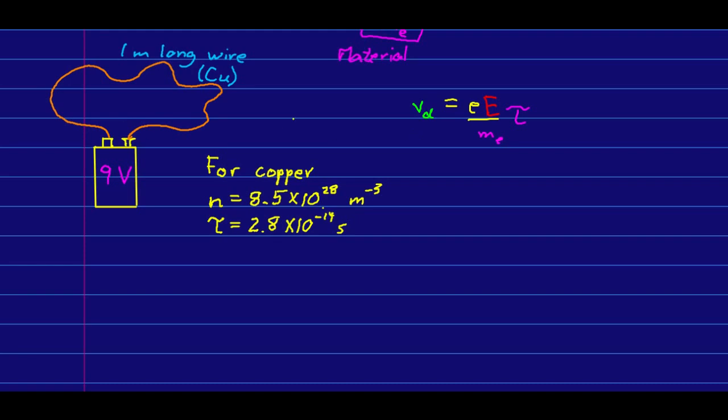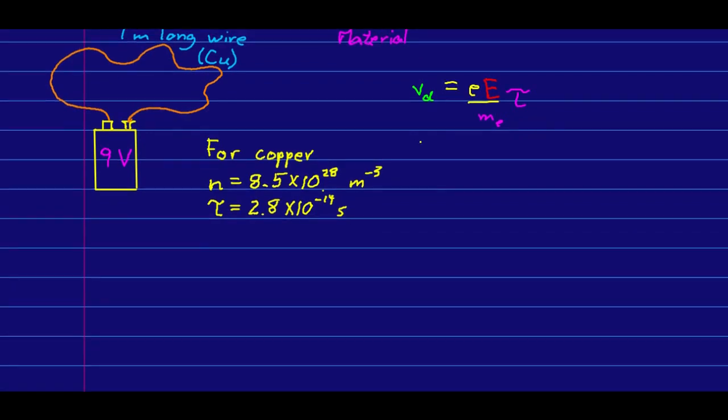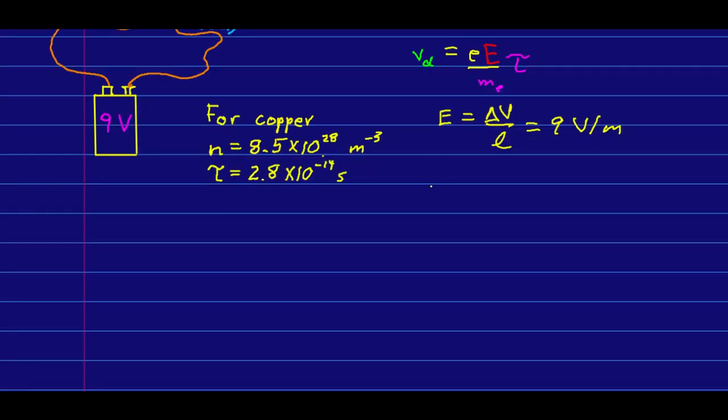But we're going to do it anyway as an upper limit on what sorts of drift speeds we would see in a copper wire. So with this, we now know that the E field magnitude is just going to be our potential difference over the length of wire. And so that's just nine volts per meter.